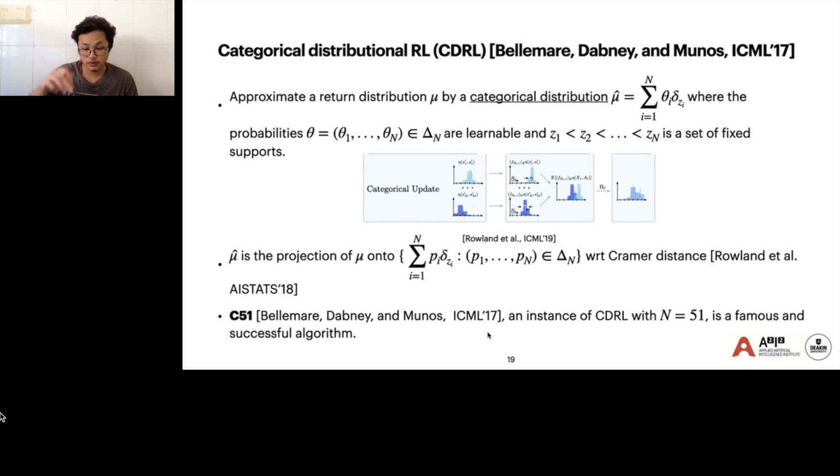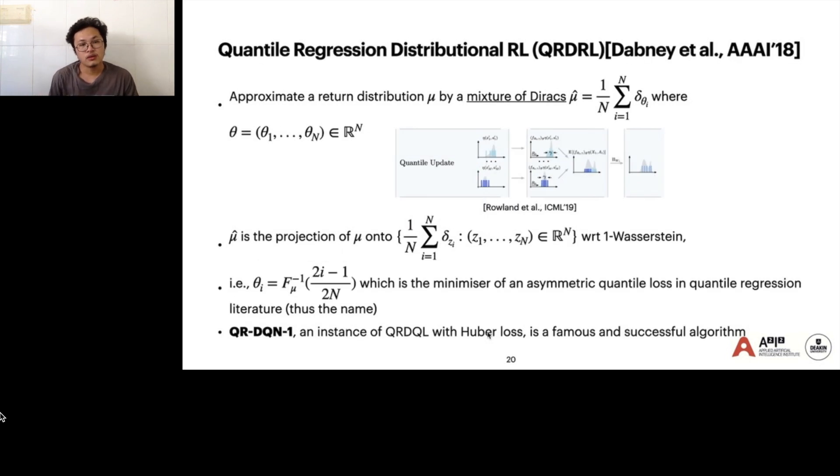The second one is quantile regression distributional RL, or QRDRL. The idea is to approximate a return distribution μ by a mixture of Diracs. Here, the particle θ is learnable. Theoretically, μ-hat is a projection of μ on the set of mixture of Diracs with respect to one-Wasserstein distance. In fact, it can be solved analytically by θ equal to the quantile values at specific quantiles, or fixed quantiles, through the distribution μ. QRDQN is the famous instance of QRDRL, which is a famous and successful algorithm in practice.